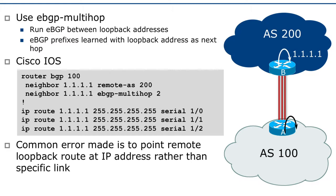If you look at the diagram, router A and router B are physically connected to each other, as we've seen in the examples before. However, we can't really run eBGP on the point-to-point links because the diagram has three point-to-point links — if we just run one session, which link do we use? So instead, we run eBGP on the loopback address.